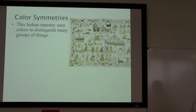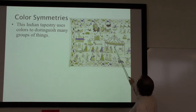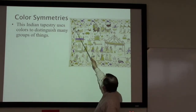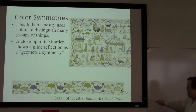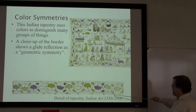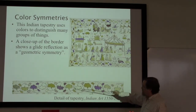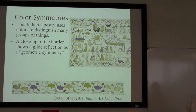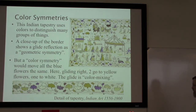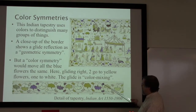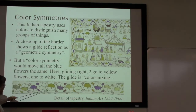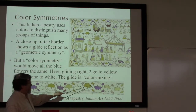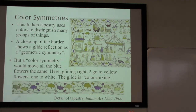This is a tapestry from India with lots of colors — groups of women, flags, houses, and flowers. The color is being used to distinguish many different things. Looking at a close-up of the border, we see a very nice geometric design with a glide reflection on these flowers. If we did have a color symmetry, as we moved to the right this blue would glide and flip to white. But this blue glides and flips to yellow, and this blue glides and flips to a yellow — so the colors are not working. What we have is color mixing.